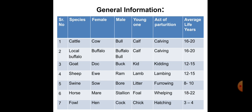Now look at this general information chart. You can see the species, female name, male name, young one name, and act of parturition. Cattle have an average lifespan of 16 to 20 years. Buffalo: the male is called buffalo bull and the young one is called calf. For goat: the female is called doe, the male is called buck, the young one is called kid, and the act of parturition is called kidding.